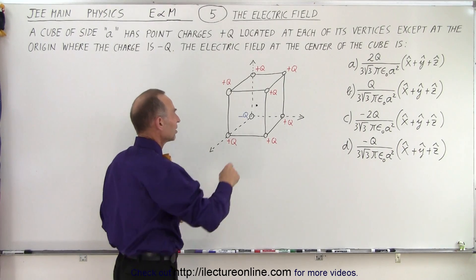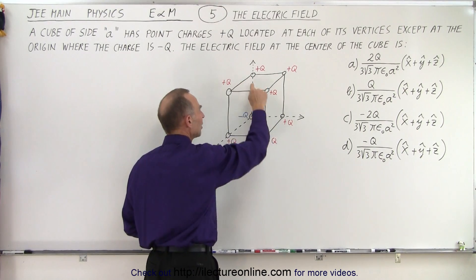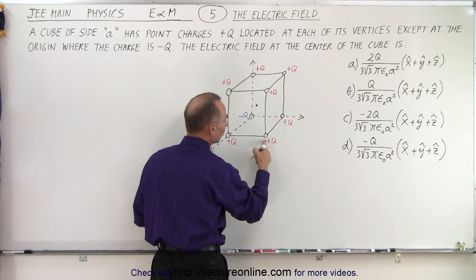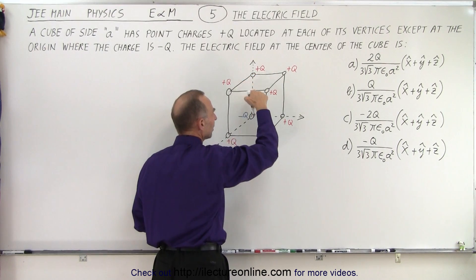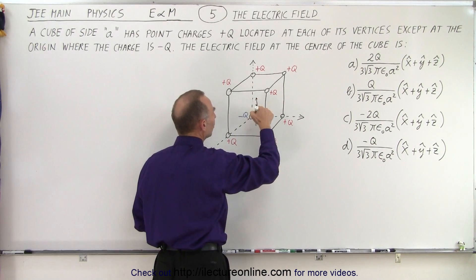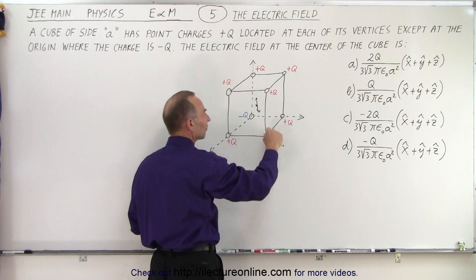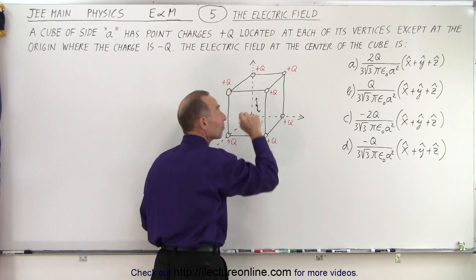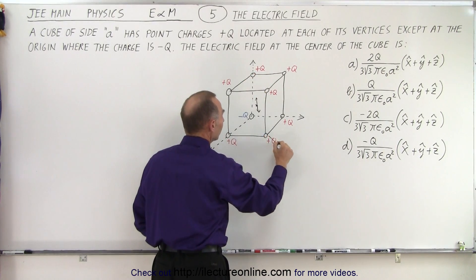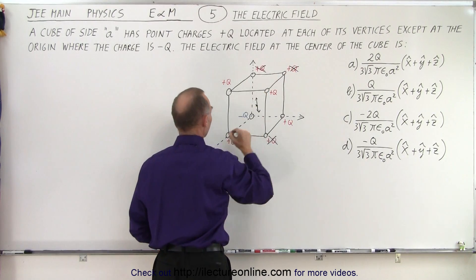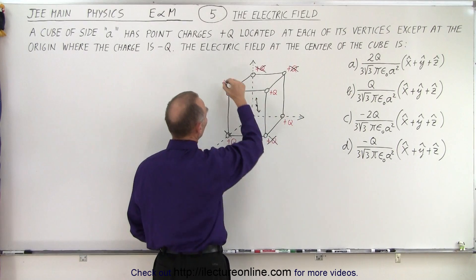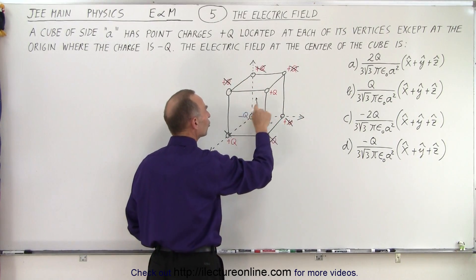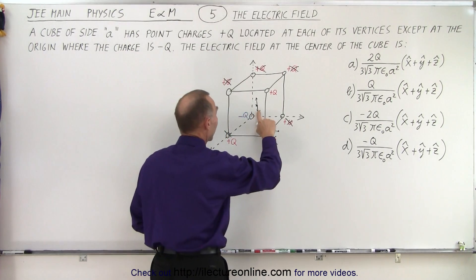Notice that if you take opposite corners — this one and this one — these are opposite corners. The electric field caused by this charge at the center would be away from that charge, and the electric field caused by the opposite one would be at the same location in the exact opposite direction, equal in magnitude, because these have the same size charge and they're the same distance from the center. So these two charges cancel each other out. This charge and this charge cancel, and this charge and this charge — they're opposite corners — they cancel each other out. So we're left with just these two charges which do not cancel, reducing the problem to just handling those two charges.